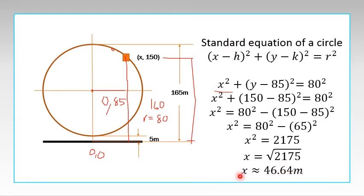...that the distance from the center, the horizontal distance from the center of this cable car or this capsule, is 46.64 meters. So this is how we solve this specific problem. Hope this helps you.